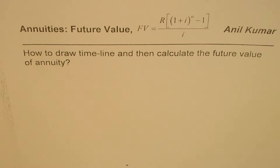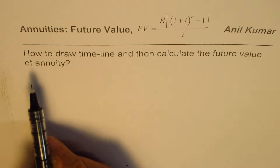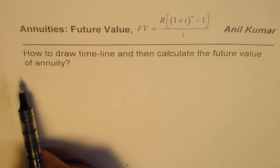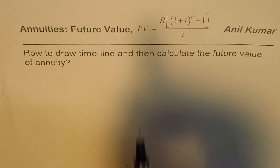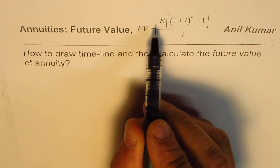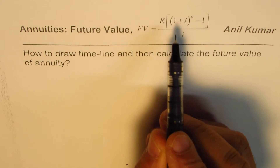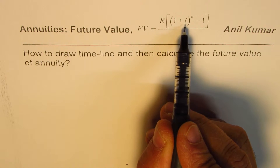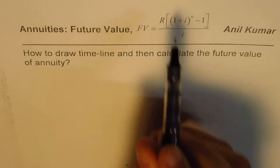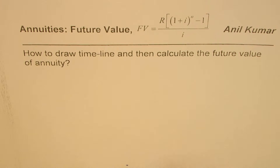I'm Manil Kumar and in this video we will understand basic concepts about annuities. The question here is how to draw a timeline and then calculate the future value of an annuity. The formula for future value is: FV = R × [(1 + i)^n − 1] / i. We will understand all these parameters in this video.